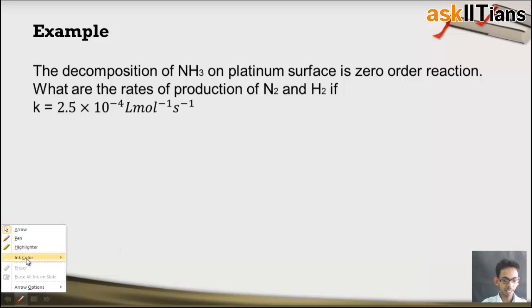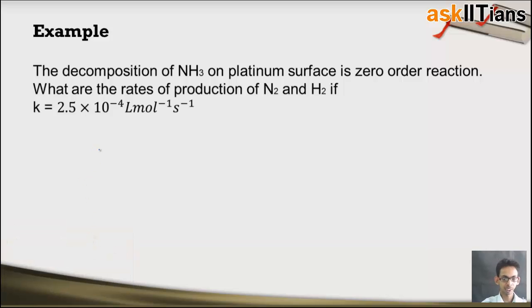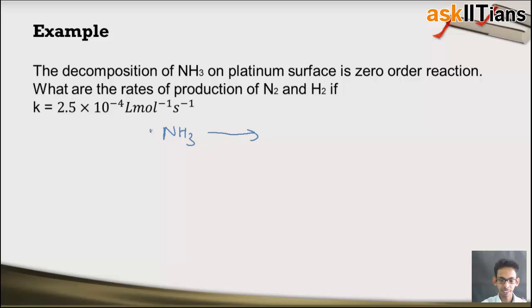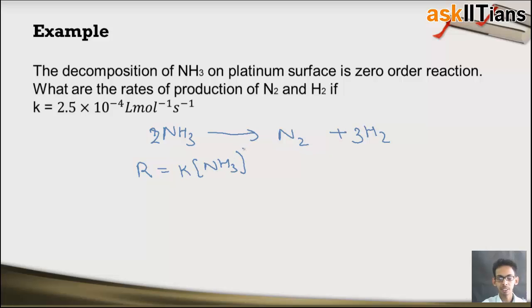Now let's understand all the things we have studied so far with a simple example. The question says decomposition of ammonia on a platinum surface is a zero order reaction. Let us write the balanced equation for the decomposition reaction: 2NH₃ → N₂ + 3H₂. Since it is a zero order reaction, the power on the concentration of ammonia is 0, and the rate of reaction becomes equal to the rate constant K, which is given as 2.5 × 10⁻⁴ mol·L⁻¹·s⁻¹.